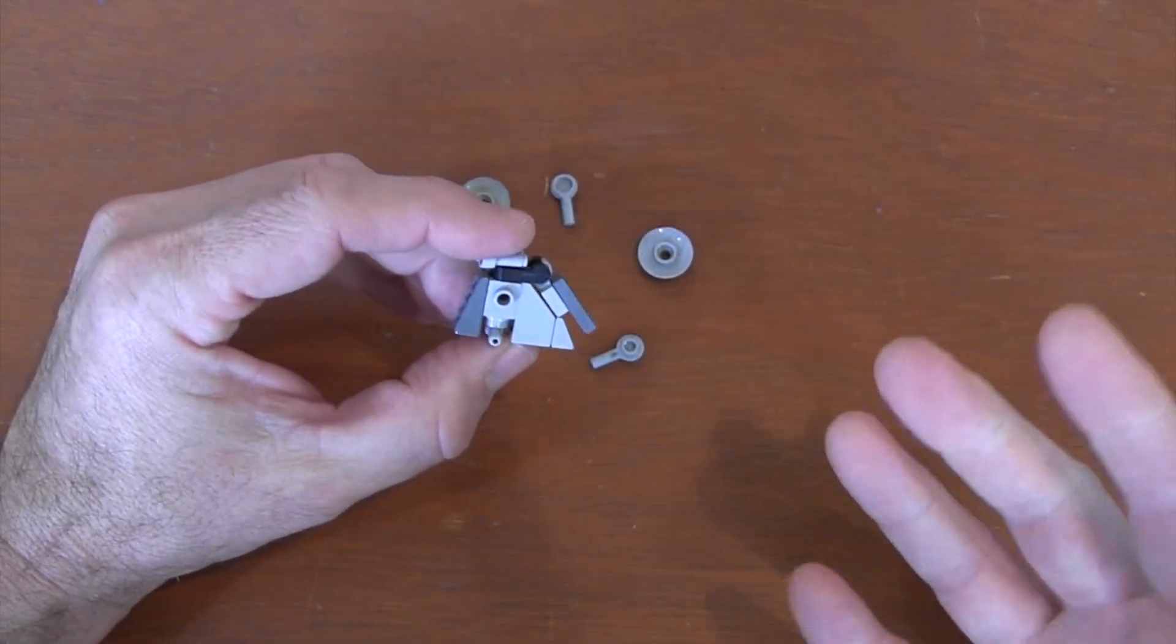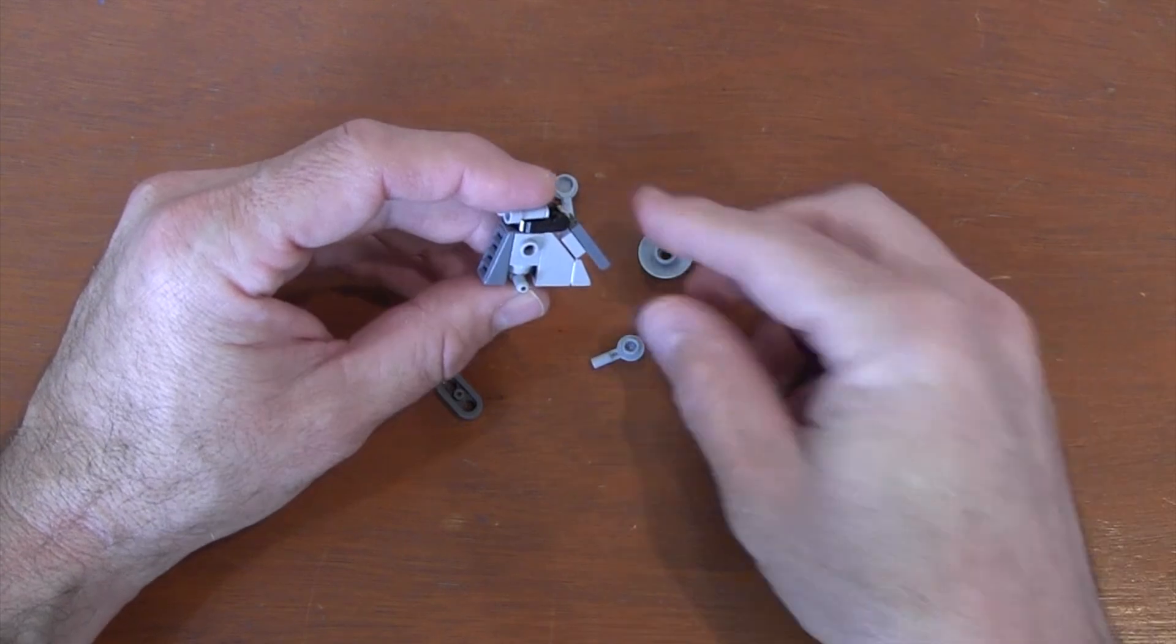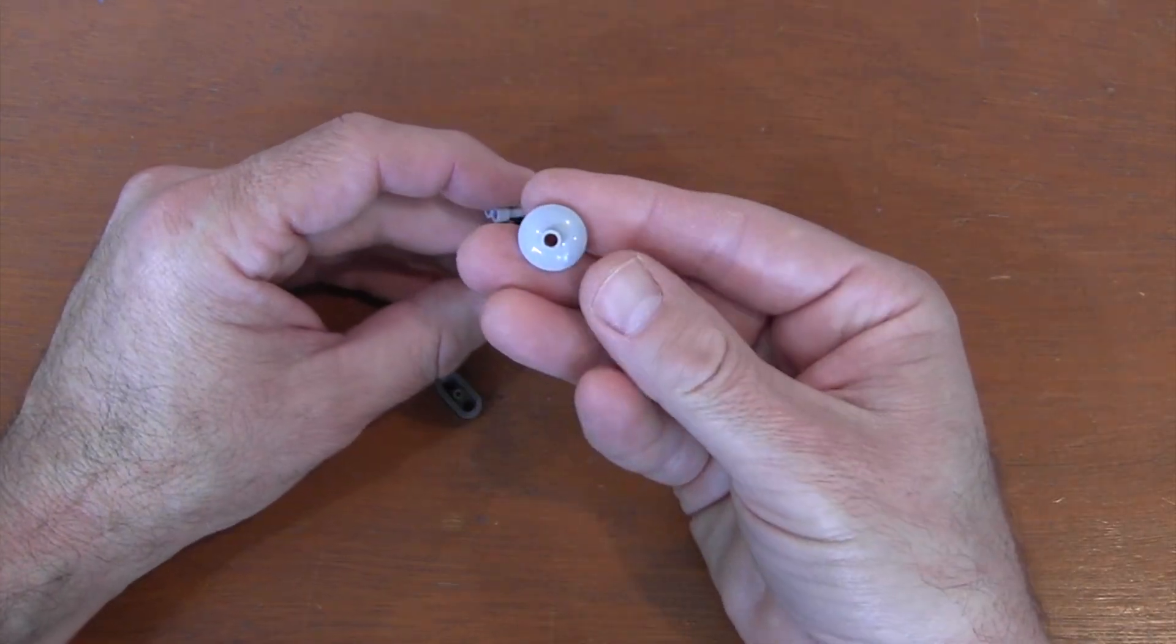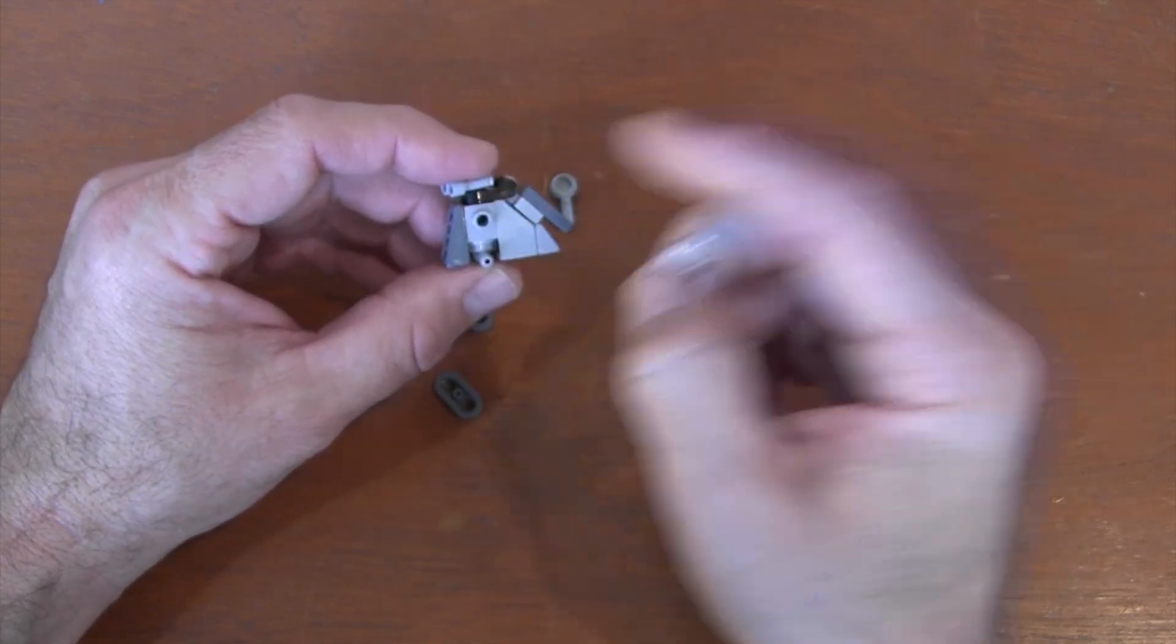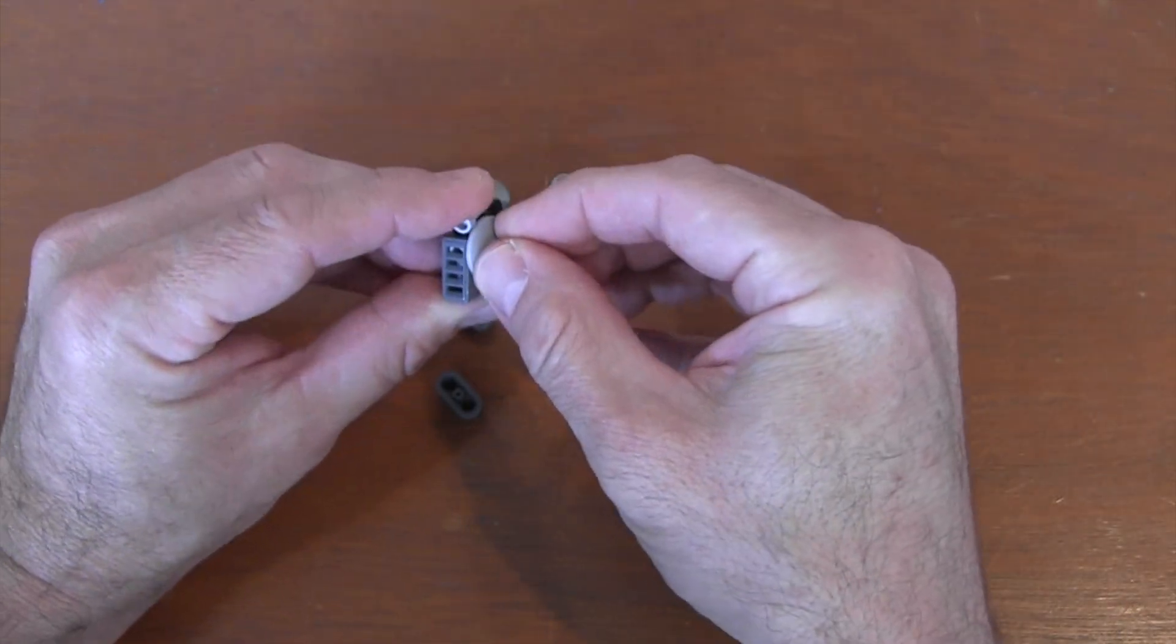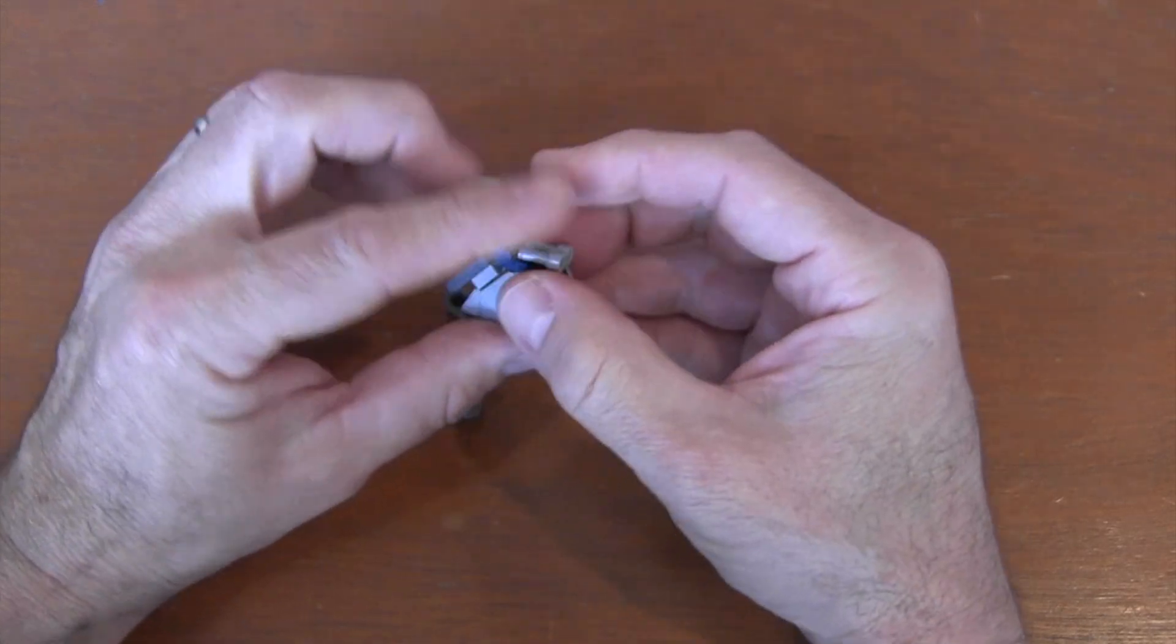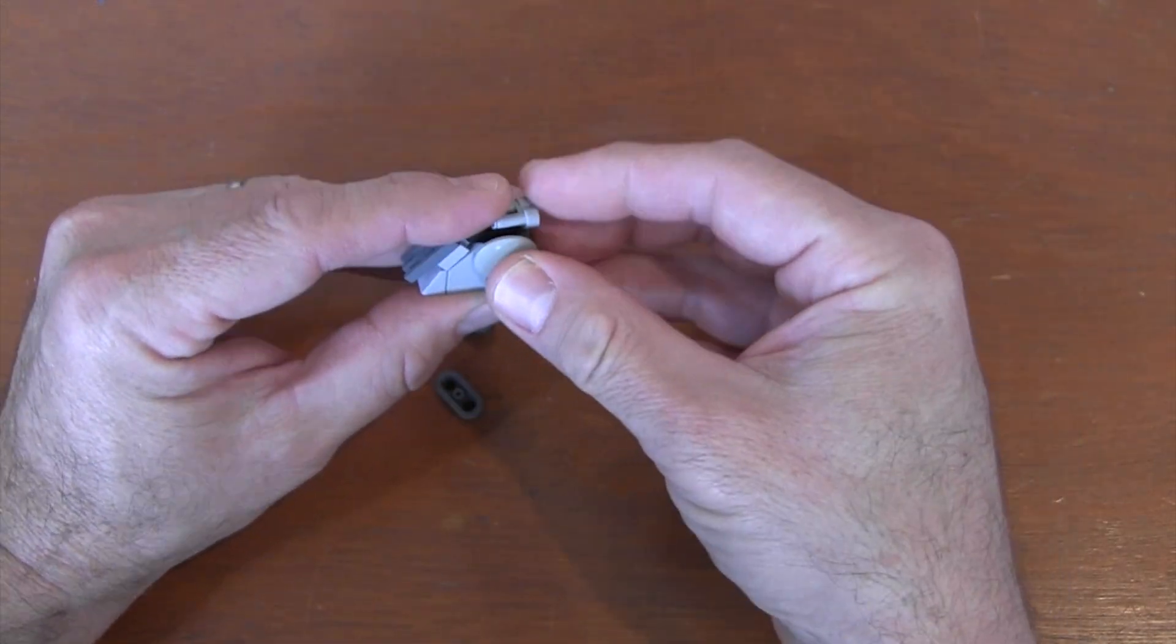Now I've got a droid, but this thing's a tank—it needs to be armored. To create that armor on the sides, I'm going to grab two two-by-two inverted radar dishes and put them on the side studs of the Travis brick above the T-bar on the bottom.